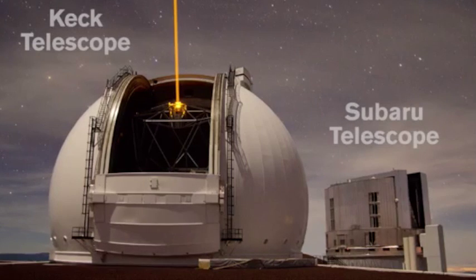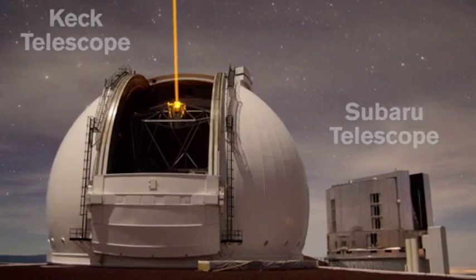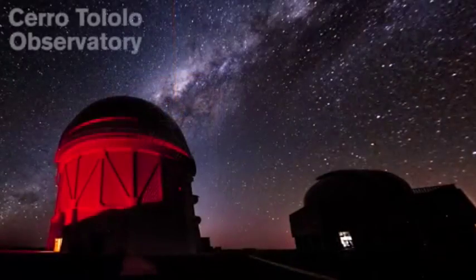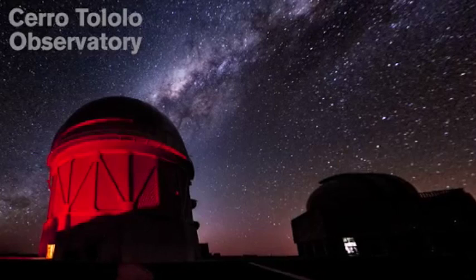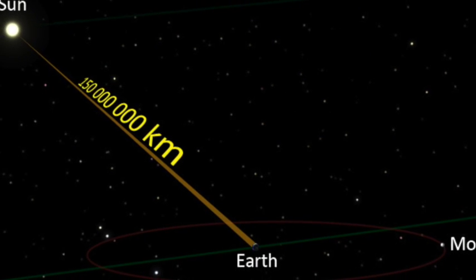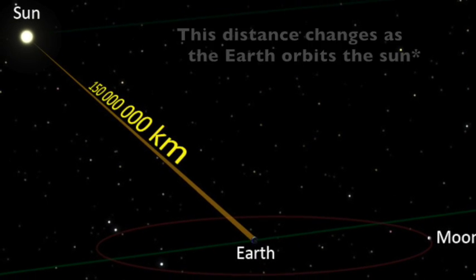Because the perihelion, or the closest point to the Sun in its orbit, is seven times farther than Neptune, or 200 astronomical units. In case you didn't know, an astronomical unit is the distance from the Sun to Earth, which is about 150 million kilometers.